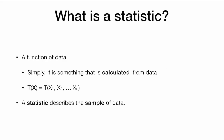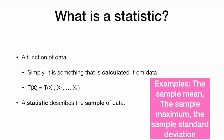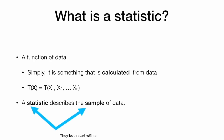What is a statistic? A statistic is a function of data — simply, it is something that is calculated from the data. We might write that a statistic t is a function of our vector of data x, or a function of all of our data points from x1 to xn. A statistic describes the sample of data. Some examples are the sample mean, the sample maximum, the sample standard deviation — anything calculated from the data. One way to remember: a statistic describes the sample. They both start with 's'.